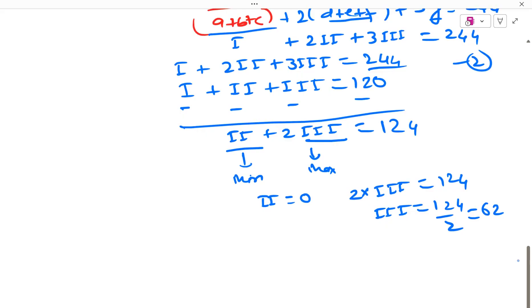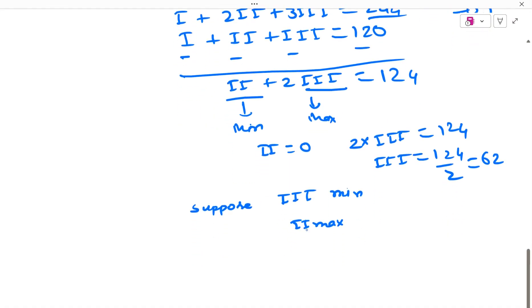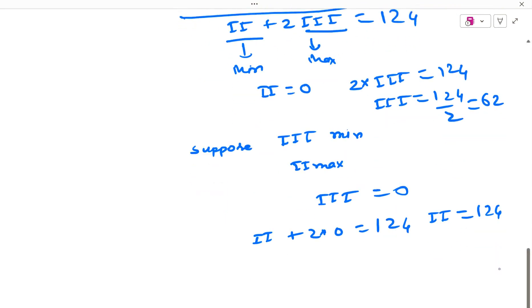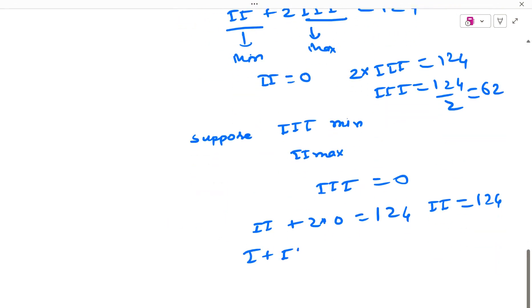Now they also are saying to minimize this also. So if I want to minimize 3, so I will have to maximize 2. But if I want to minimize 3 and I take value as 0, let us assume that 3 value is 0, then 2 plus 2 into 0 will be 124 and 2 will be 124. But I know from first equation that my 1 plus 2 plus 3 is equal to 120. So this 2 cannot be 124 because it can be at max equal to 120.